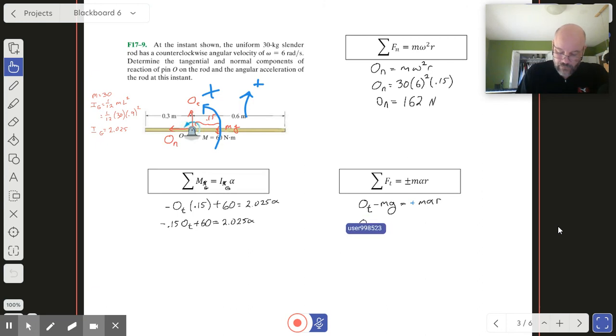Let's get some numbers. We got Ot - 30(9.81) = 30·r·α, and r is 0.15. That actually worked out pretty good because I got an Ot here, an Ot there, an alpha here and an alpha there. So I've got two equations and two unknowns, which means I'm in pretty good shape to solve that.